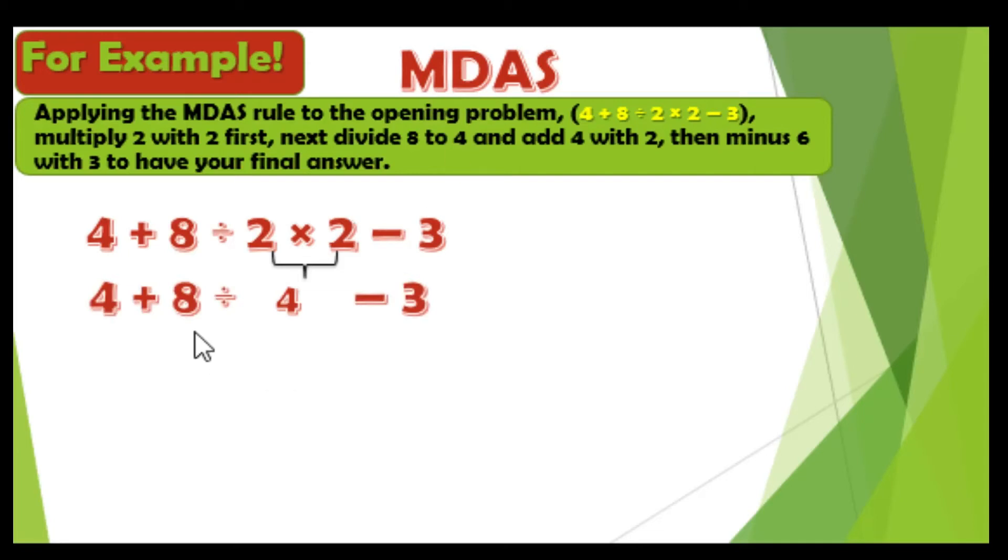8 divided by 4 is equal to 2, and then copy this one below, and then copy this one below. Next to division is addition.